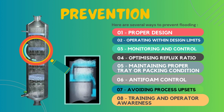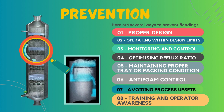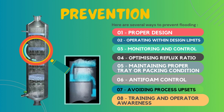The fifth preventive measure is maintaining proper tray or packing conditions. We should regularly inspect and maintain the internal components of the distillation column, such as trays or packing, to ensure they are free from fouling, damage, or other issues that can impair proper vapor-liquid distribution. Damaged trays or packing should be cleaned or replaced as needed to maintain optimal column performance.